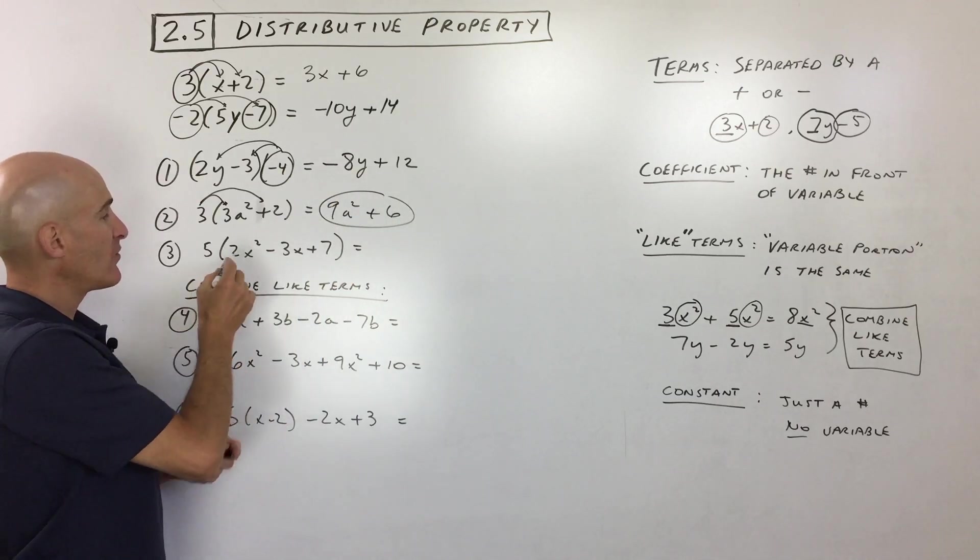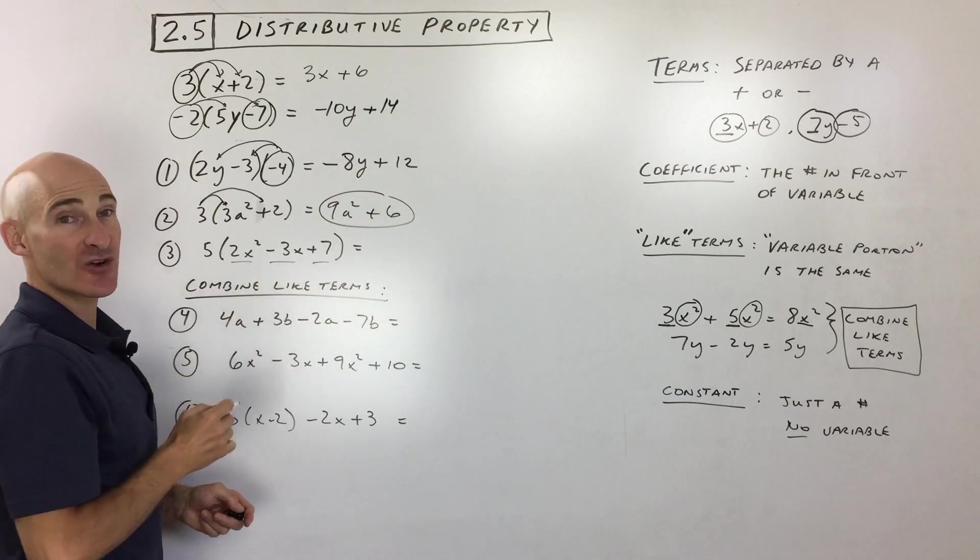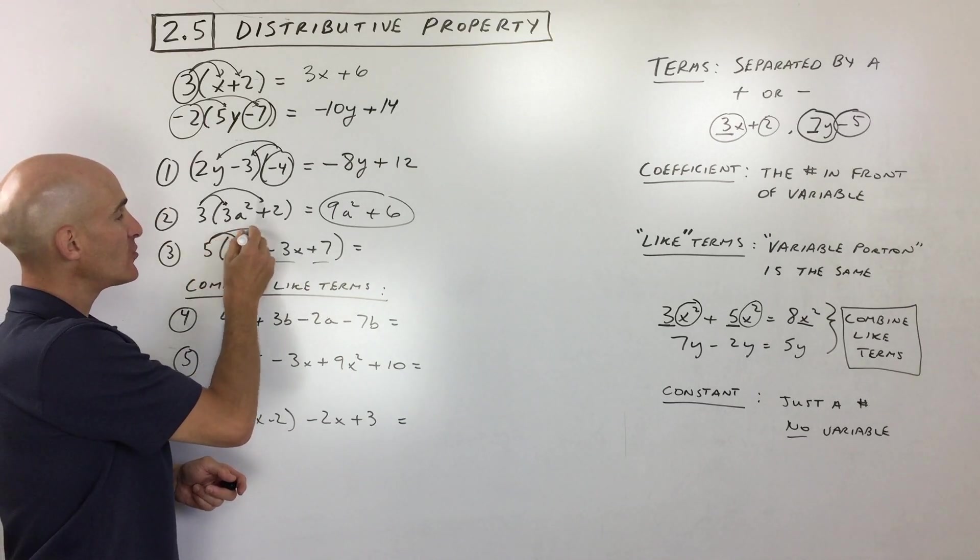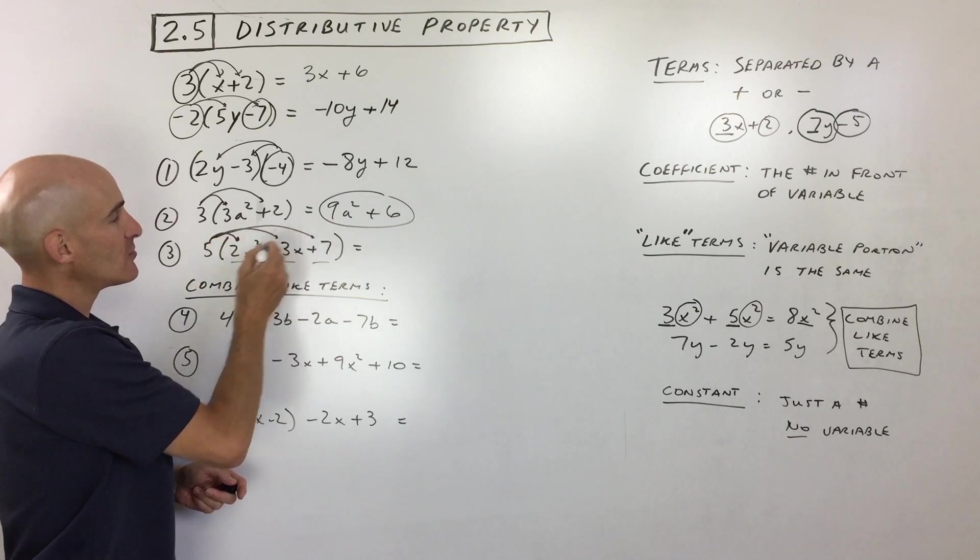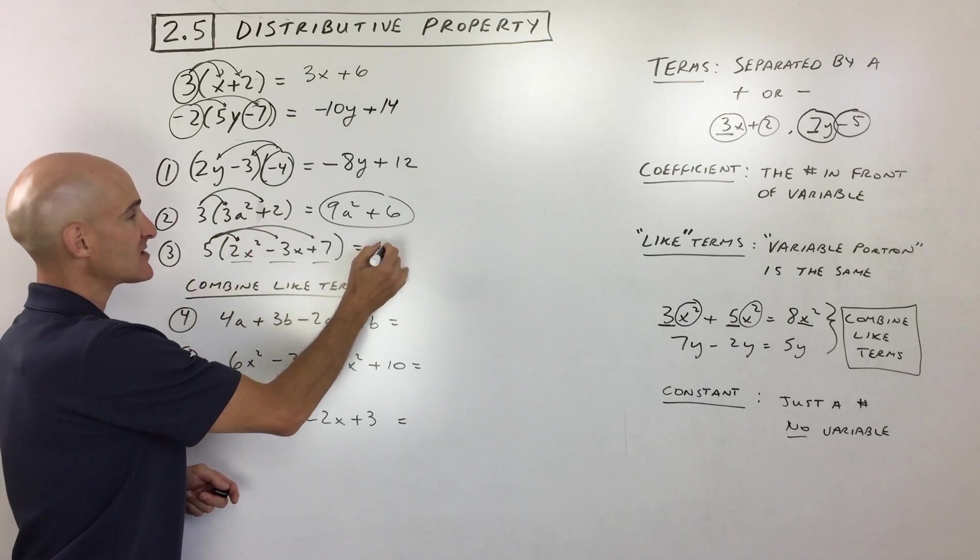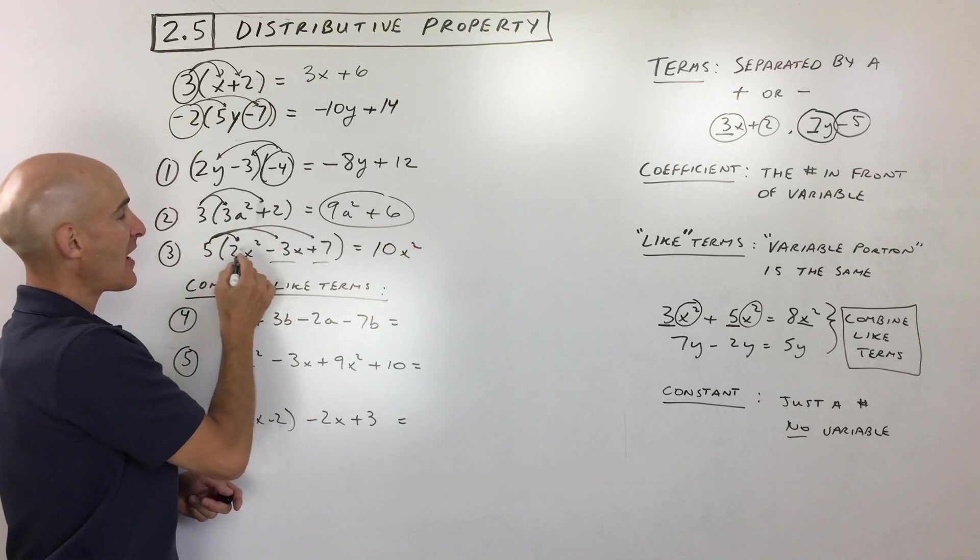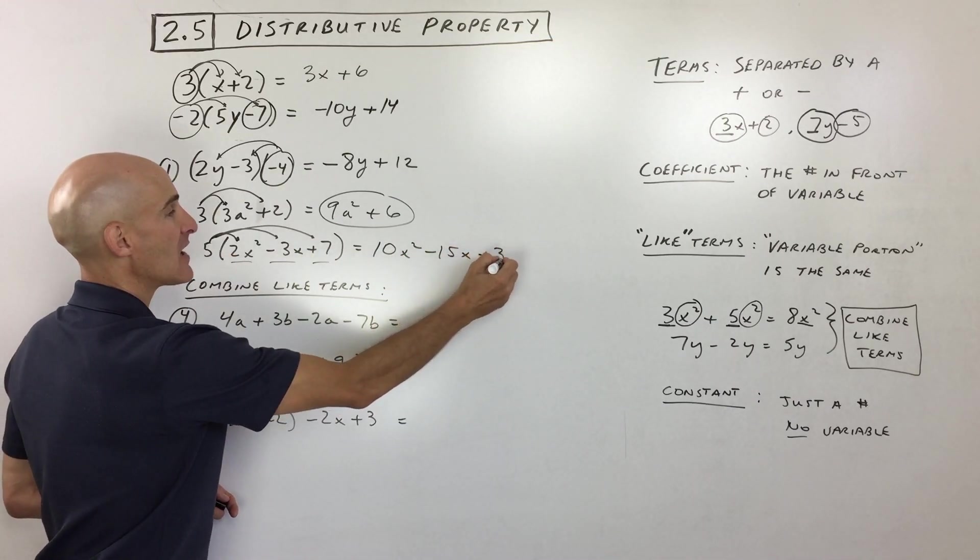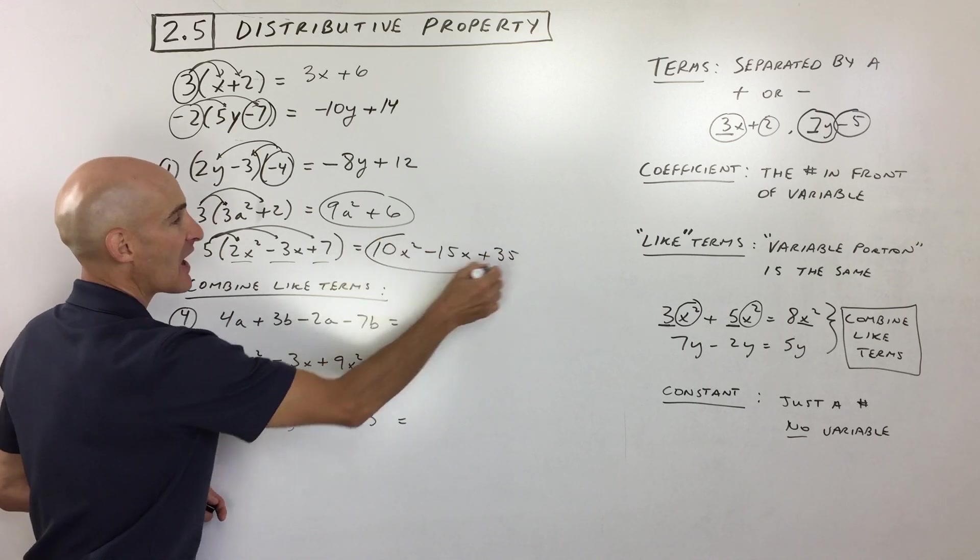This one here, we've got 1, 2, 3 terms. Notice the terms are separated by minus or plus. So 3 groups. We're just going to distribute, distribute, distribute. 5 times 2 gives us 10x squared. 5 times negative 3 gives us negative 15x. 5 times 7 gives us positive 35. And you've got it.